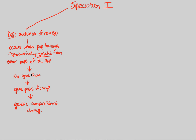We can actually describe this happening by looking at two different speciation events: allopatric speciation, which we'll do in this video, and sympatric speciation, which we'll do in a later video. We're going to first look at allopatric.